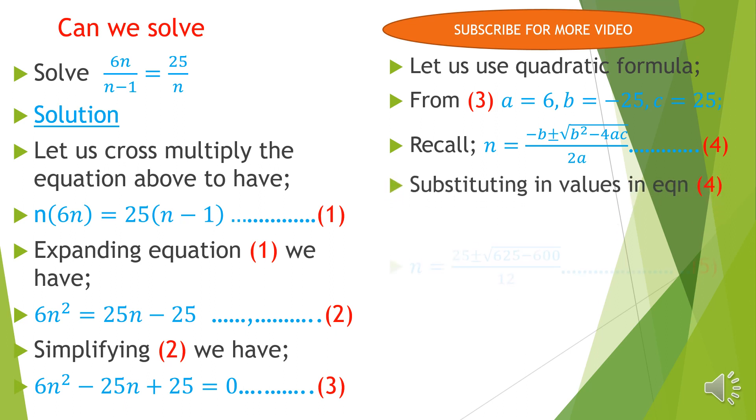Substituting, we have n = (25 ± √(625-600))/12 = (25 ± √25)/12. Simplifying, we get n = (25 ± 5)/12.